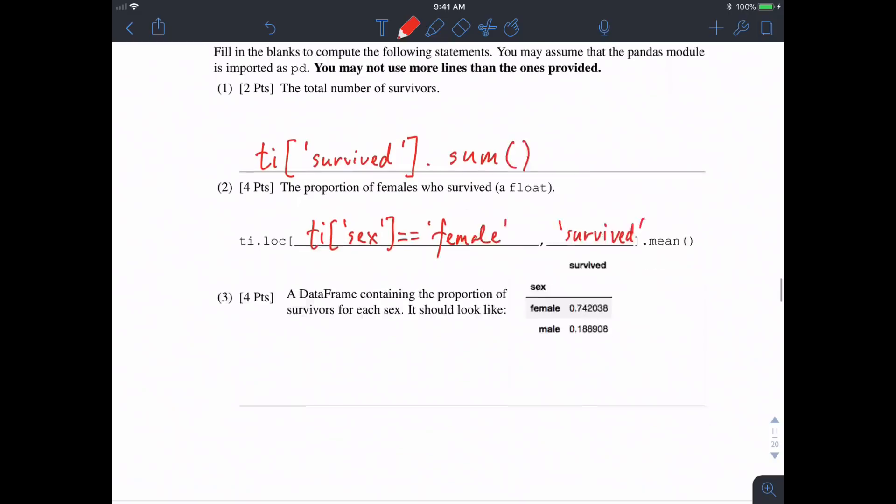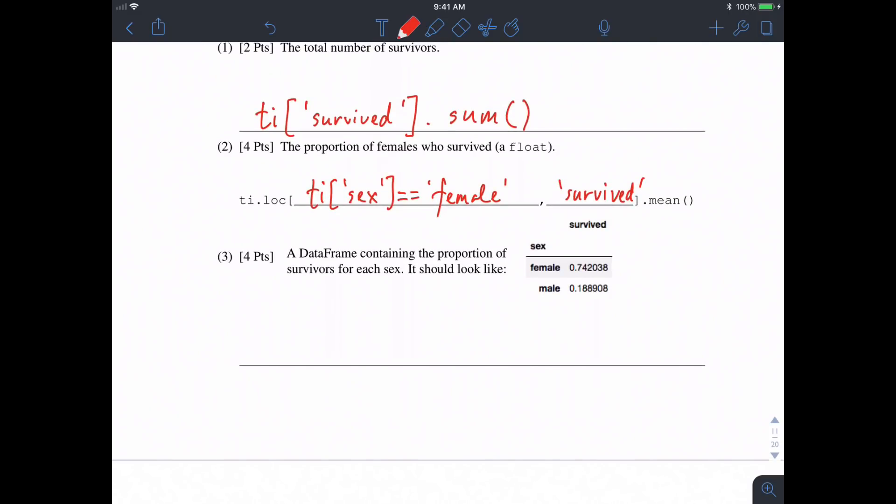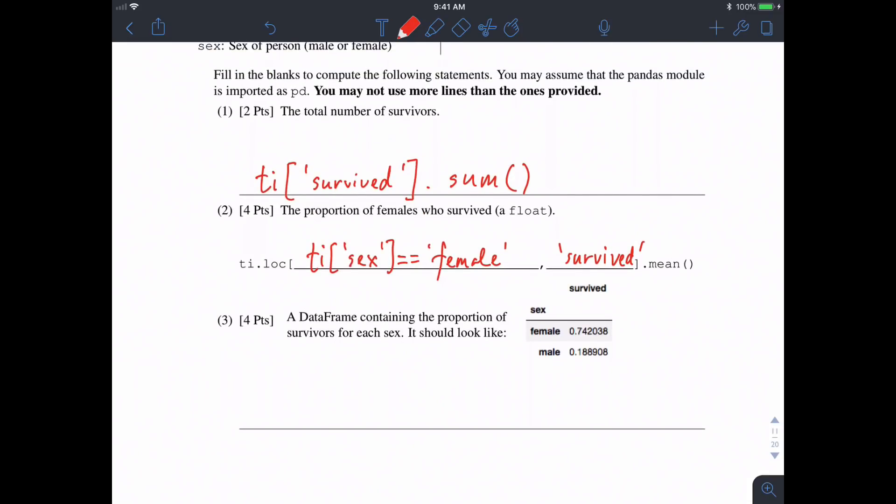Now we're moving on to a question where we might need to use a group. We want a data frame containing the proportion of survivors for each sex, and so the indices should be the sexes, female and male. So that probably tells us we want a group by sex, and we want the mean of whether or not they survived or not.